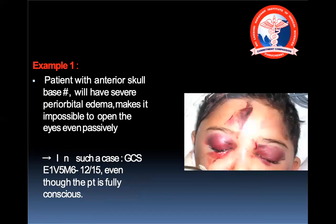Here is an example: a patient with an anterior skull base fracture with severe periorbital edema makes it impossible to open the eyes passively. In such a case, the GCS is E1 because there is no spontaneous eye opening, and hence the total GCS comes out to be 12 out of 15 even though the patient is fully conscious.